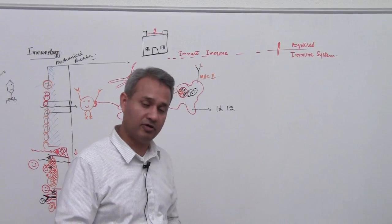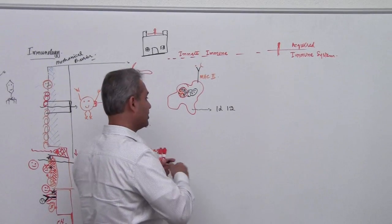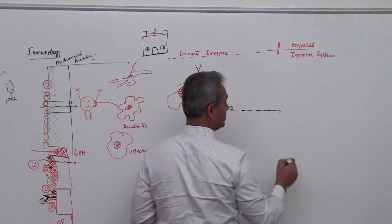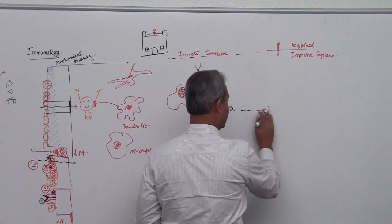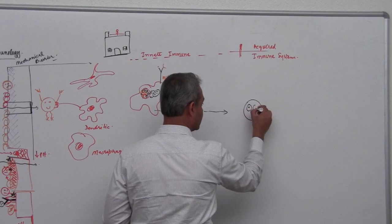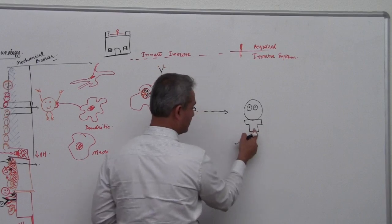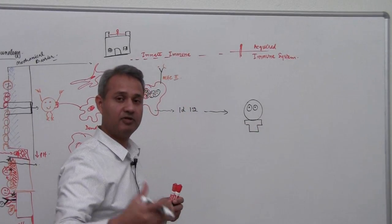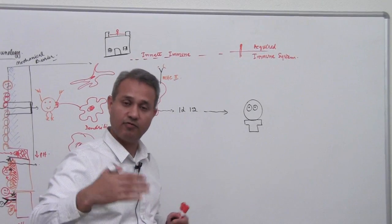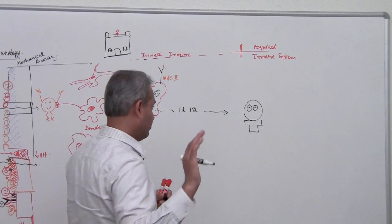We will talk more about macrophage, dendritic cells, and how this would become an arm. At this time, the important thing to note is the IL-12 will go here to the acquired arm and over there we have this really fun looking T cell. Acquired cells have two primary types of cells: T cells for thymus and B cells for bursa or bone marrow. We will talk more about them.